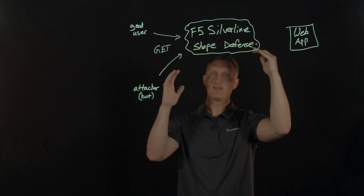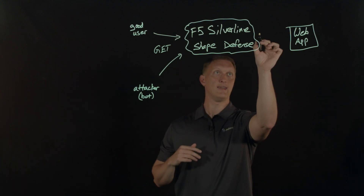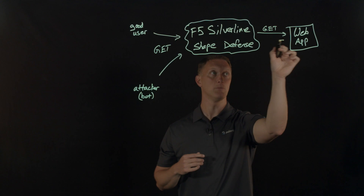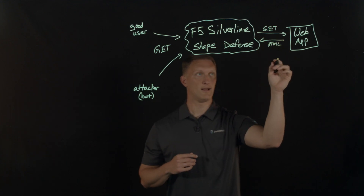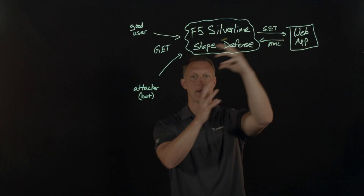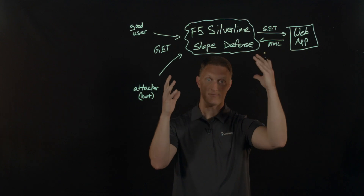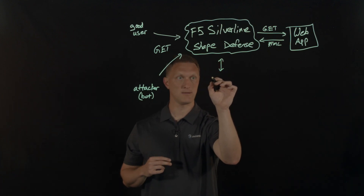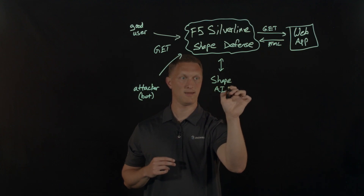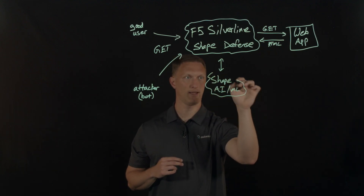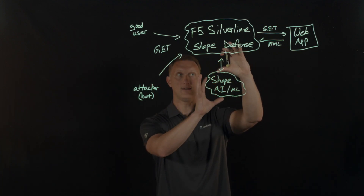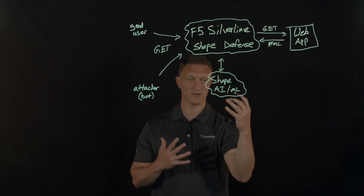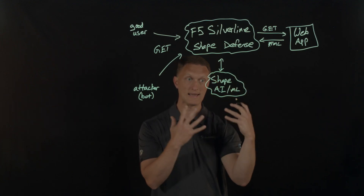The GET request comes into the Silverline Shape Defense platform and then gets forwarded on to the web application. The web application serves up the page that was requested, returning the HTML needed. On the way back through the Silverline Shape Defense service, it interacts with a cloud-based Shape artificial intelligence and machine learning capability. In this part of the process flow, the HTML is going to be modified — a script tag is inserted into the HTML code itself.